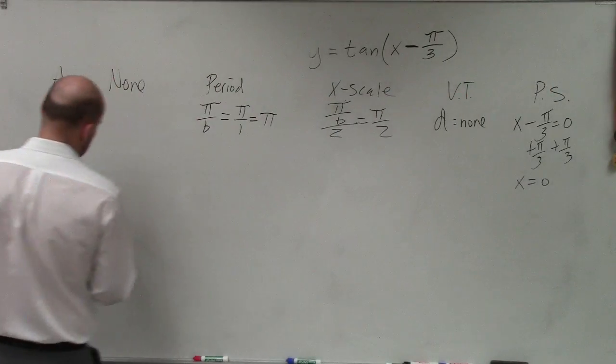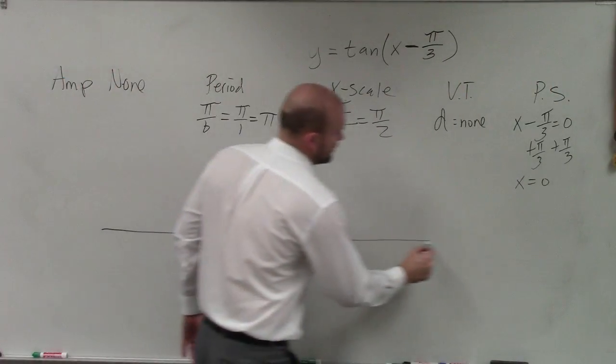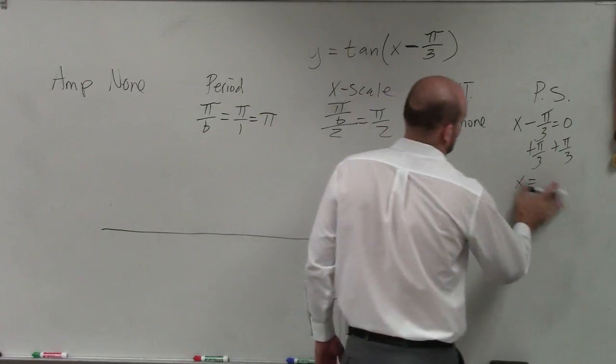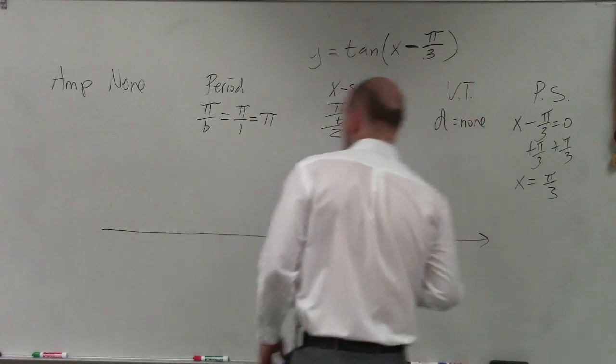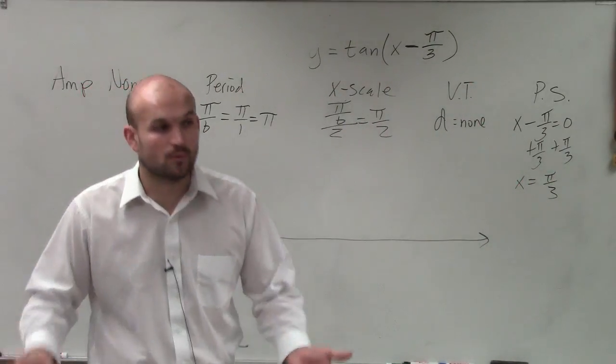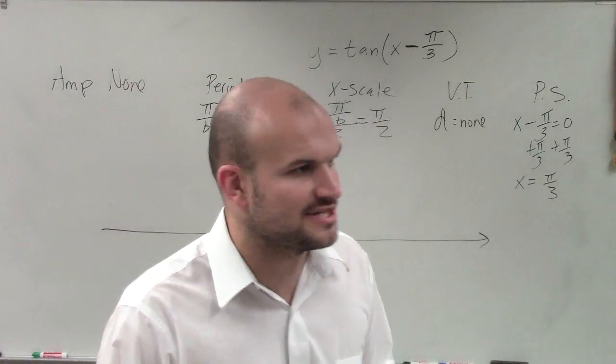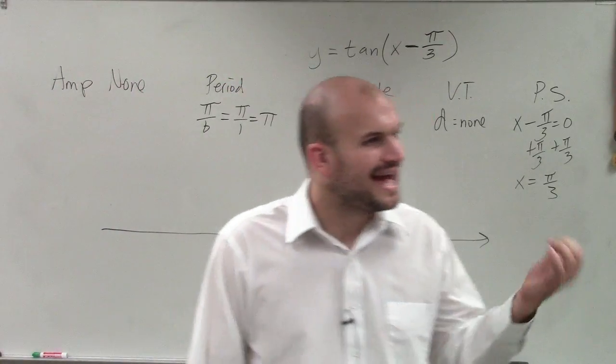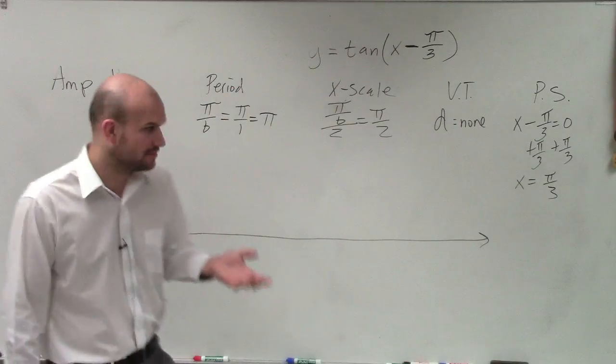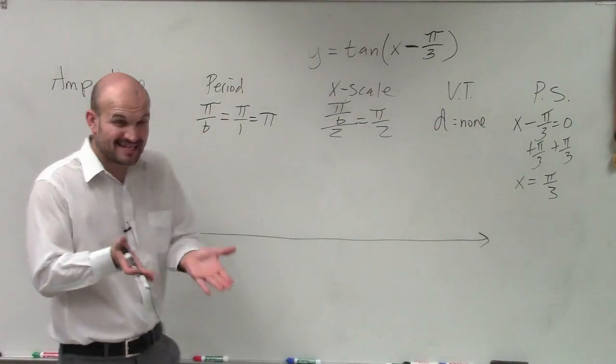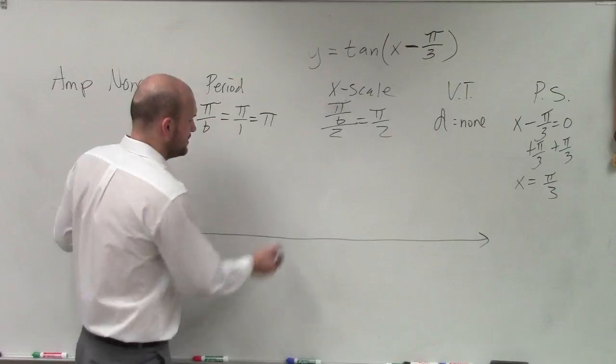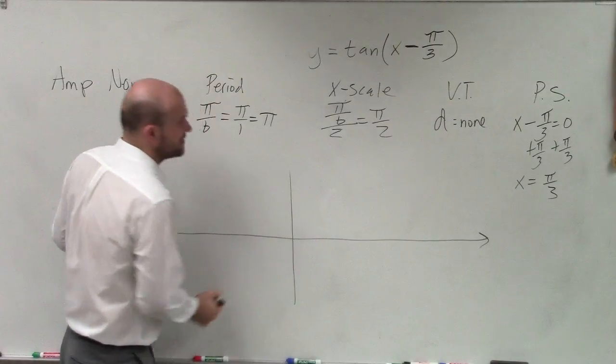So now we need to graph this. Ladies and gentlemen, graphing this, we need to again remember what does the parent graph of tangent look like. The parent graph of tangent has an x-intercept at 0, right? It crossed at 0. That was the first initial step. So I can say, well, there's 0.